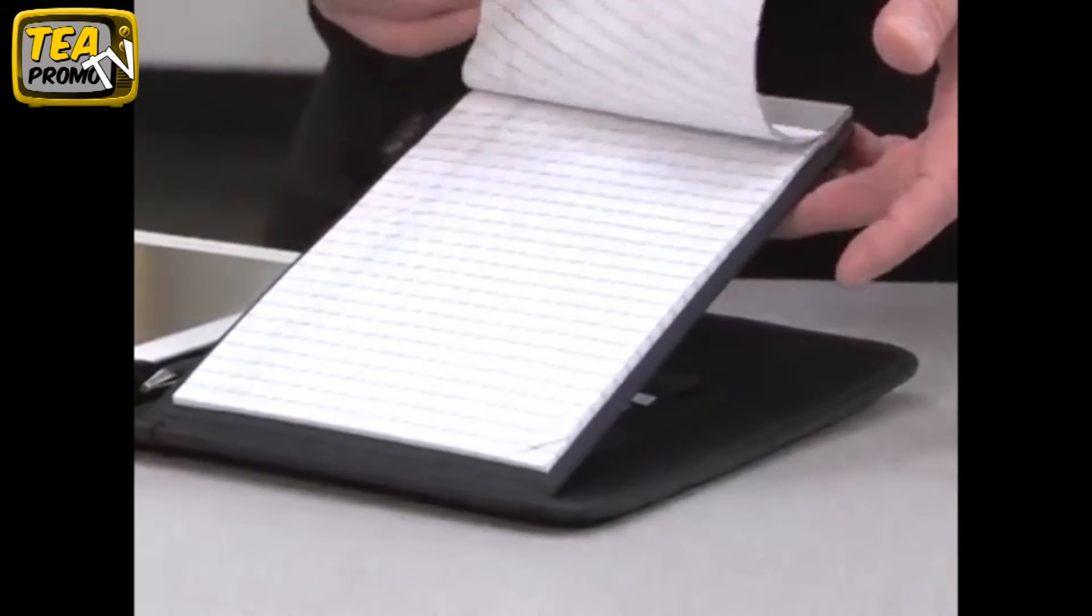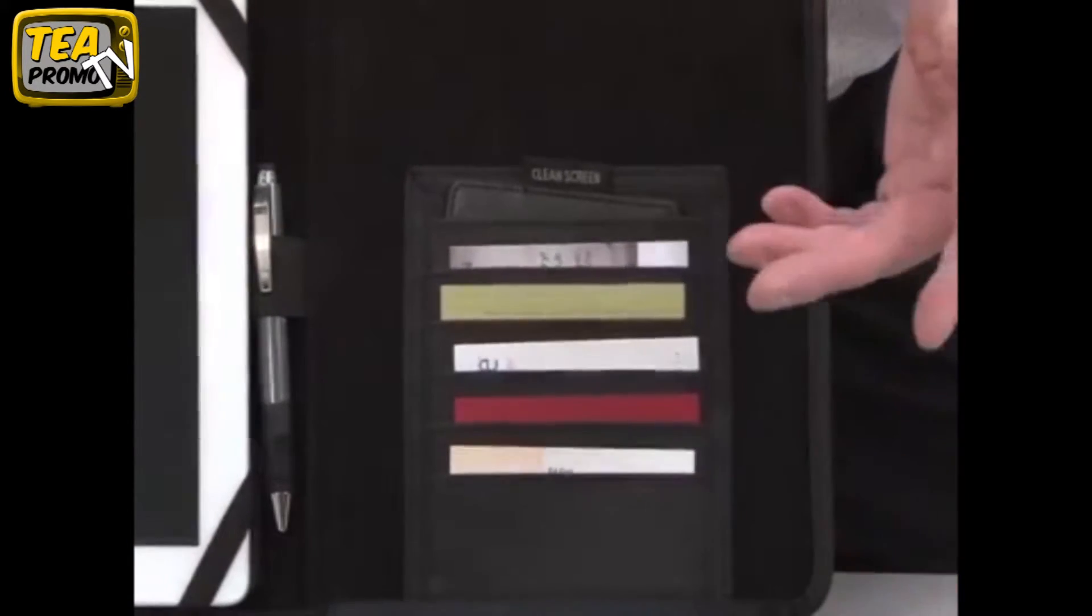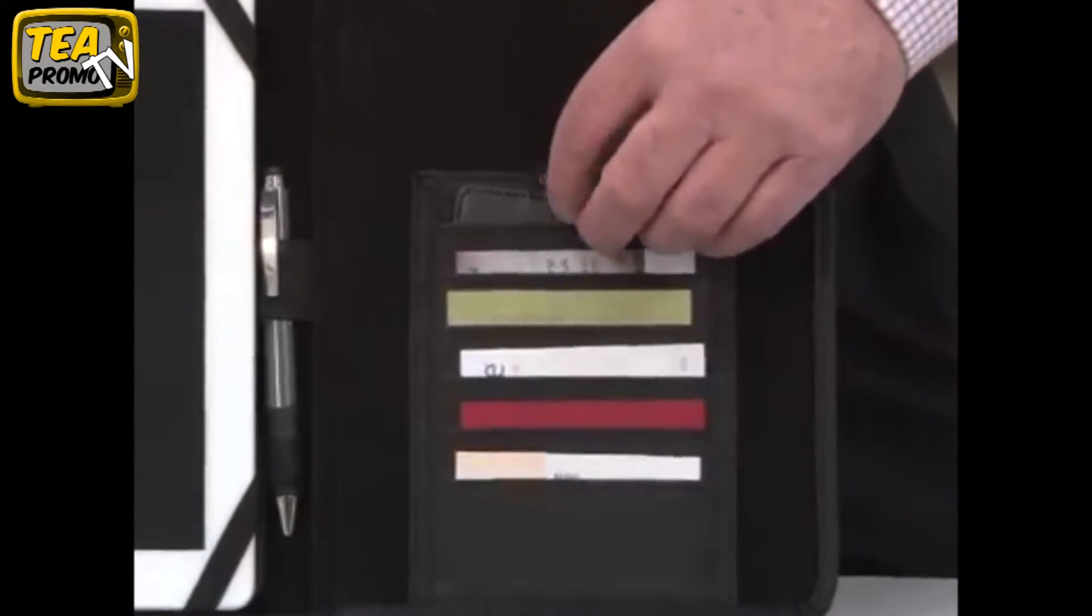It has a patented flip tuck feature for storing paper behind the pad while taking notes and it also has additional storage for business cards and a clean screen that gently removes dust and fingerprints from your tablet. This e-writing pad is perfect for the executive on the go or the busy traveler.